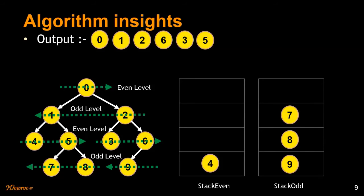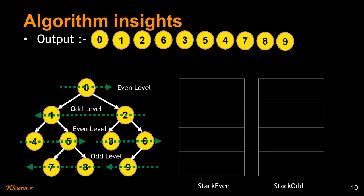There is still one more element in the even stack. We pop out four and print it. We have now completed and emptied the even stack, so we move on to the odd stack. When we pop out anything from the even stack, we push the children of those elements onto the odd stack. Now since the odd stack has elements and the even stack is empty, we pop out seven — since seven has no children, we pop out eight and then nine. That's it — we have the complete output, traversing the whole tree level-wise in a spiral manner.